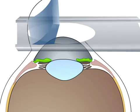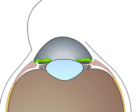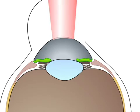The flap is then lifted up and laser is applied to reshape your cornea, correcting your vision. After laser is applied, the flap is then repositioned back to its original place.